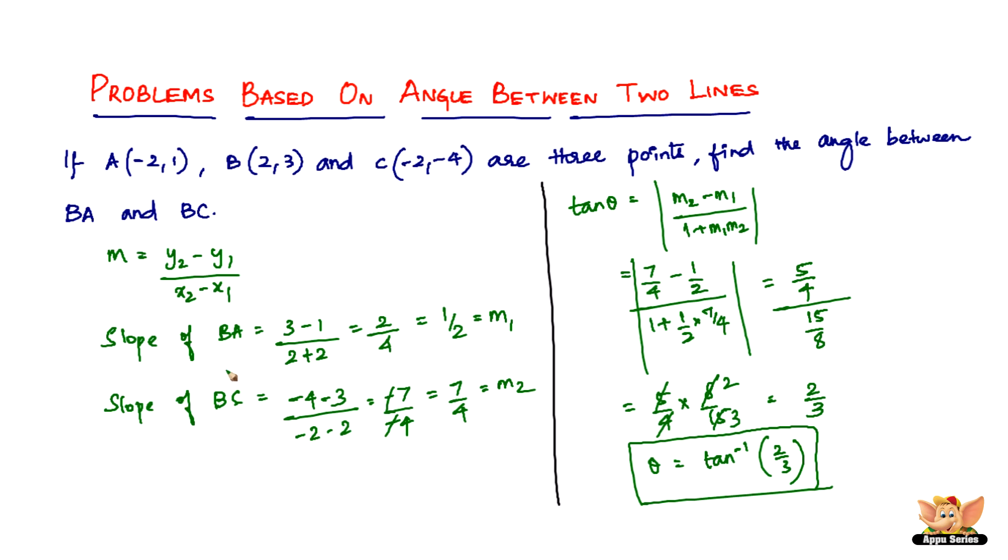So first find the slopes of these 2 lines, slope of BA and BC is found individually. Name it M1, M2, whatever you want and substitute in the formula.